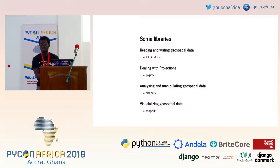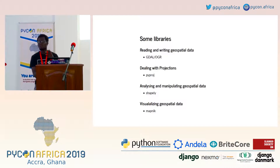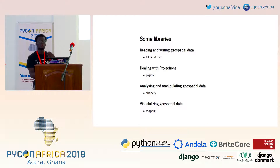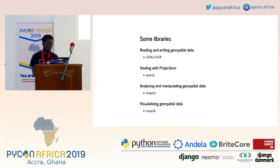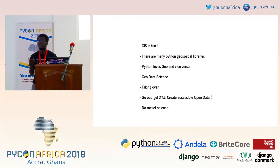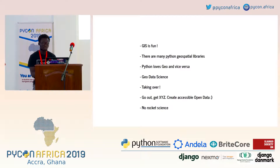There are some other libraries — there are a lot of them and we can't look at all of them. This is meant to be an appetizing talk, to motivate and inspire you to see what you are missing from the geo world. In Python, there is PyProj, which manages coordinate reference systems — so you don't need to manually handle projections yourself. GIS is fun. There is more than just writing code — what you are doing goes directly to affect something physical. Python loves Geo and vice versa. And there is geo data science — a lot of people are doing data science, but add that geospatial component and see the beauty it brings.